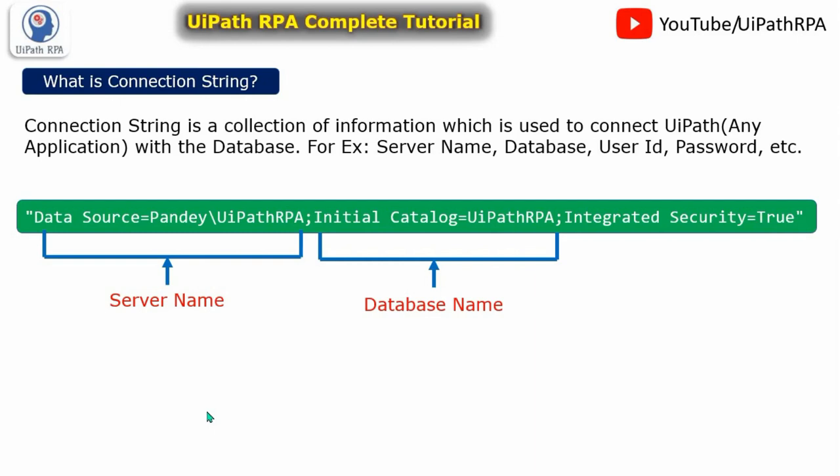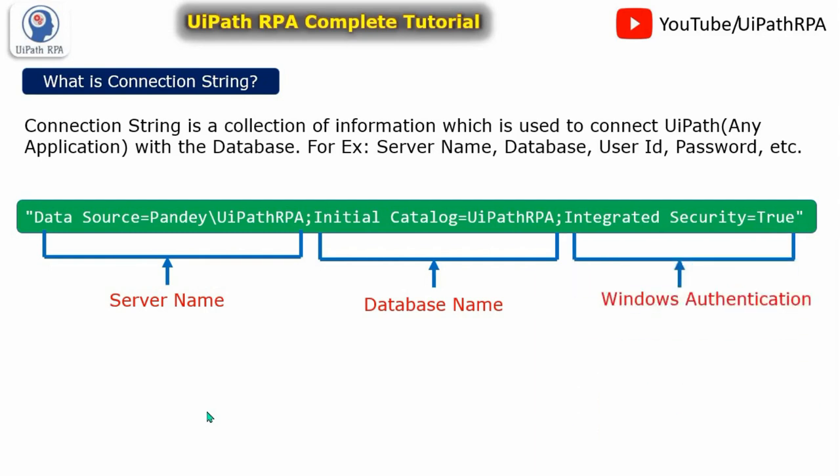Here the database name is represented as Initial Catalog equal to UiPath RPA, so here you have to provide your database name. And this is the Windows Authentication syntax.